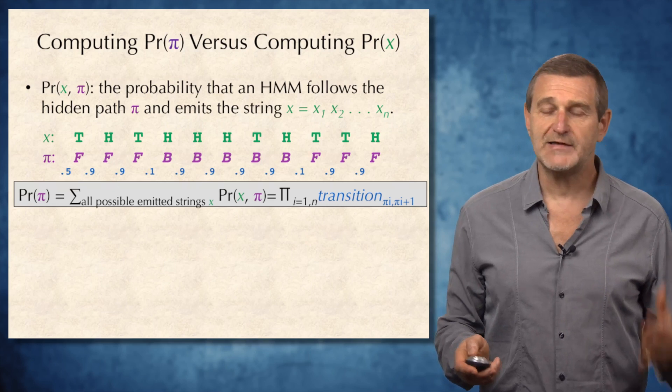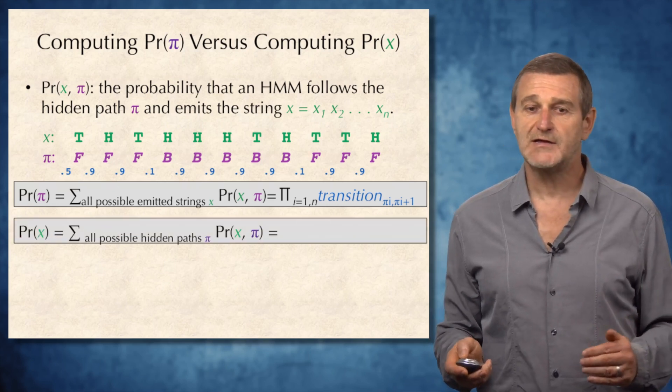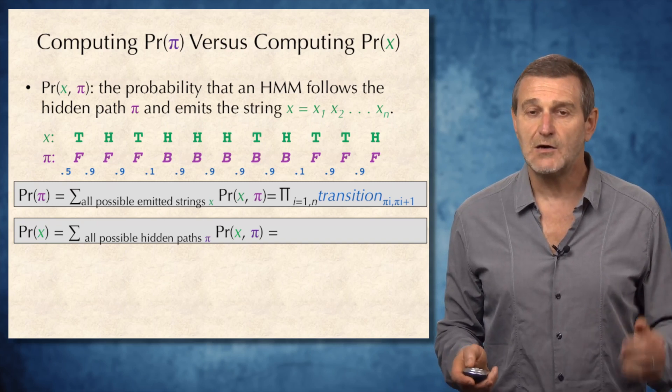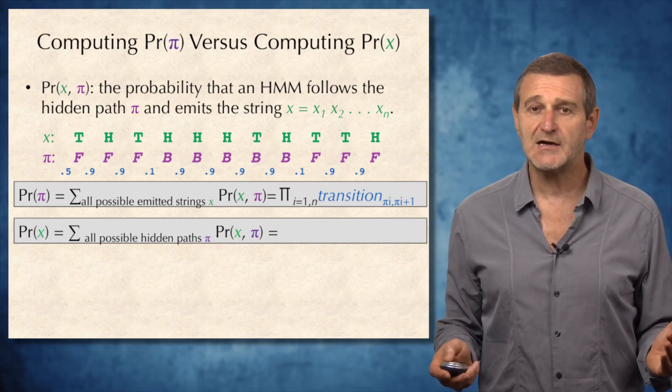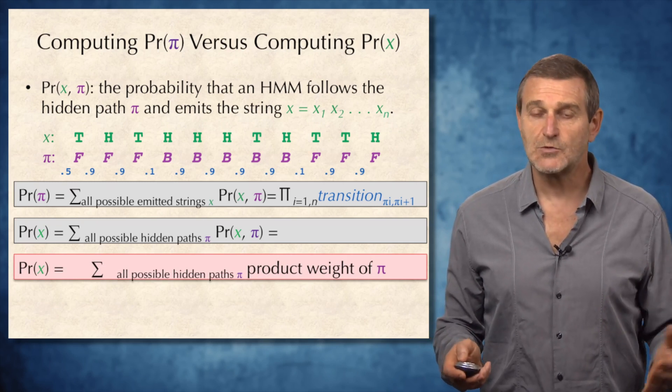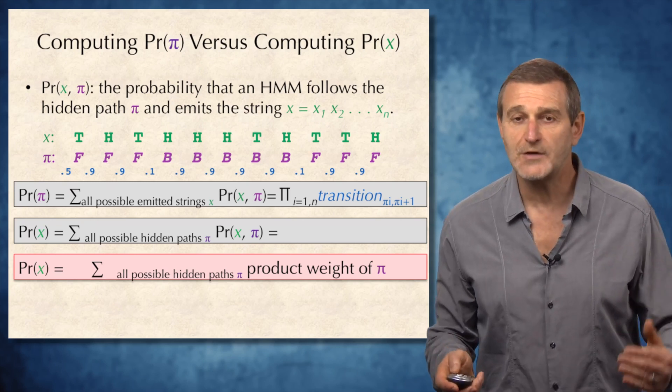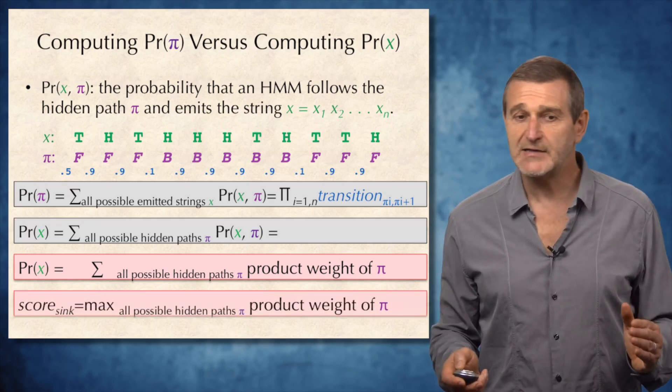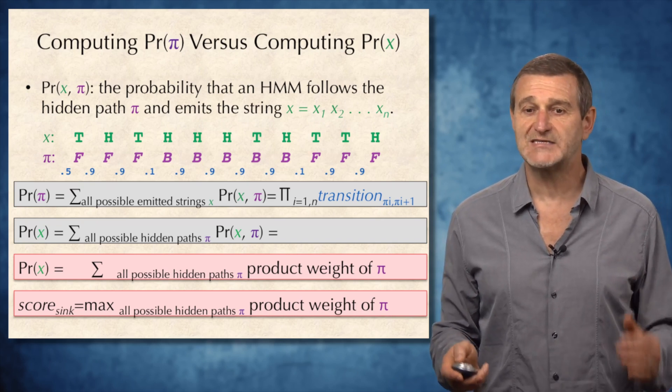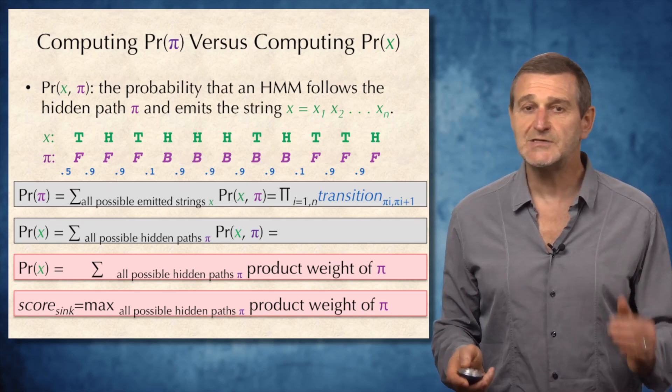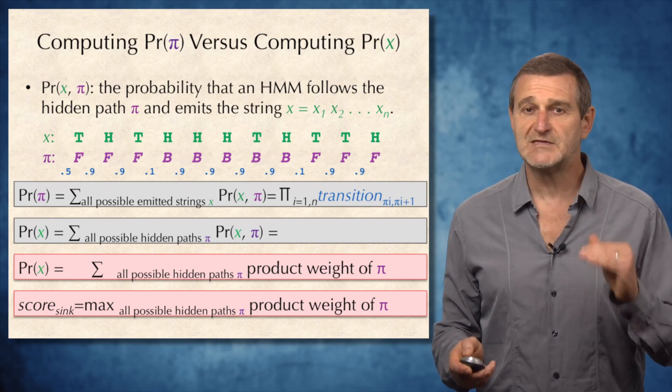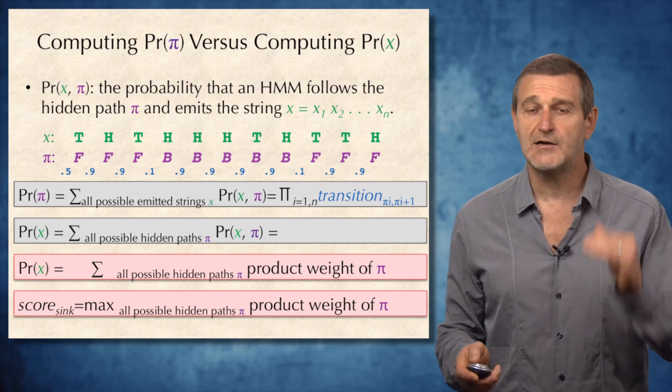So, when we compute probability of pi, it is simply multiplication of transition probabilities. But when we compute probability of x, it's the sum through all possible paths pi of probabilities of x,pi, and it is not clear how to compute this sum. Note that probability of x is the sum through all possible hidden paths pi of the product weights of pi, and compare it with a score at sink in our Viterbi Manhattan, which is maximum through all possible paths pi of the product weight of pi. These two expressions look extremely similar. Let's try to see whether we can explore this similarity to come up with an algorithm for computing probability of the emitted sequence x.